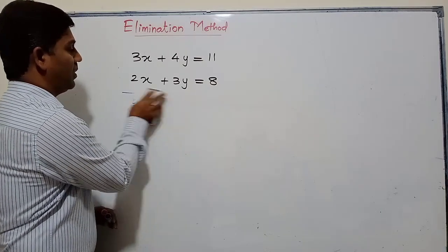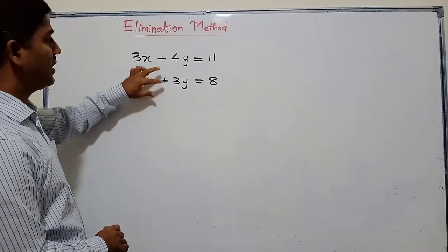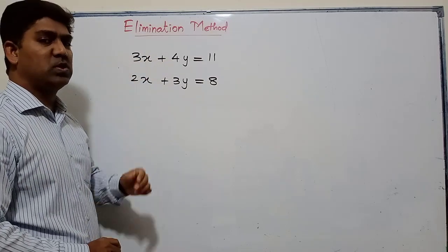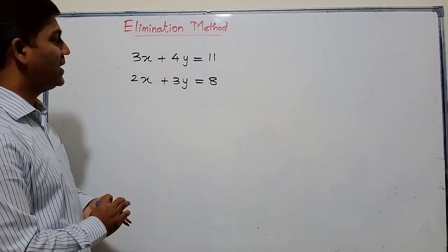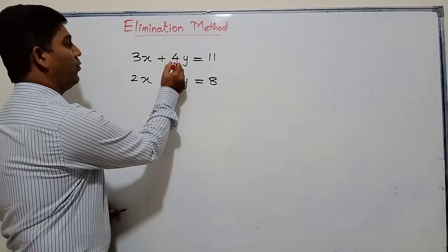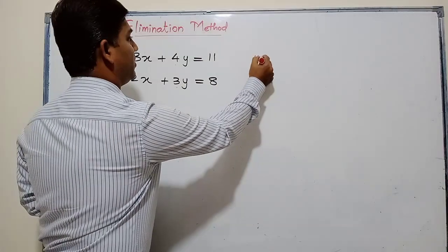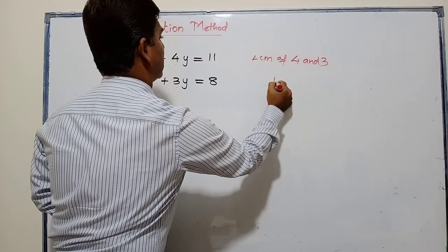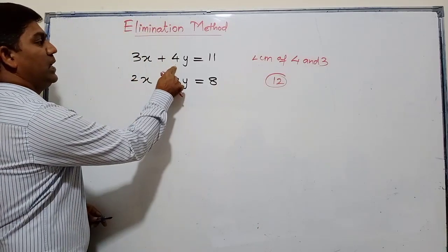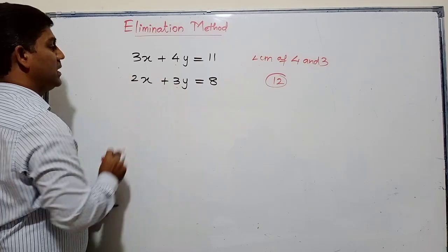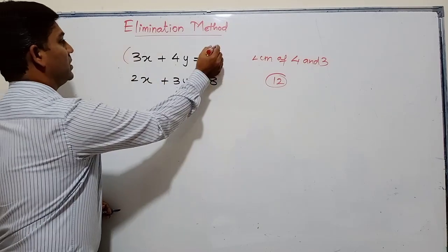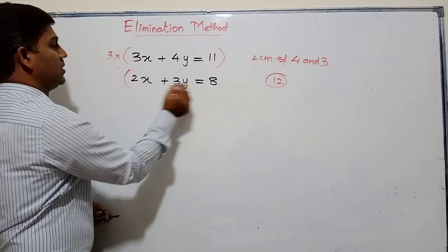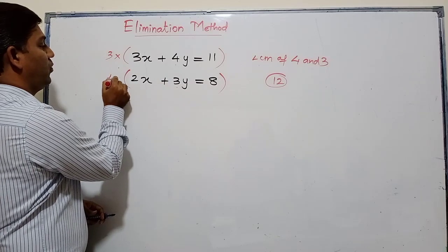To make the coefficients the same, I'll try to make the coefficient of y the same. With y I have 4 and 3, so the LCM of 4 and 3 is 12. I will try to get 12 here and 12 here. So I will multiply the first equation by 3 to get 12, and the second equation by 4 to get 12.